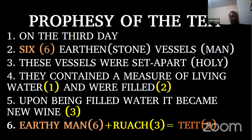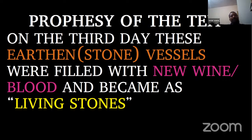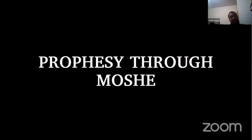On the third day, these earthen stone vessels were filled with new wine. New wine is actually connected to blood, which we will explain. These earthen vessels were filled with new wine and became living stones — that should ring some bells. If you have a stone that has life in it, it is a living stone, and that represents us. We are living stones if we have the Ruach within us.